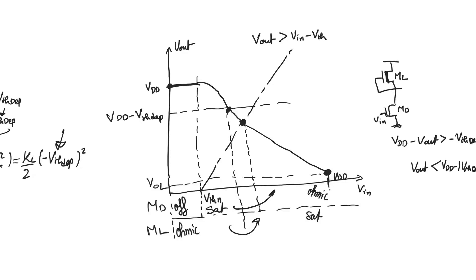The resulting VTC is still somewhat wasteful and not near the ideal VTC — it doesn't give the best possible noise margins. But unlike the enhancement load VTC, which had two straight-line sections intersecting near V_threshold and forced V_input_low to equal V_threshold, the depletion mode inverter has a V_input_low that is higher than V_threshold. The noise margins are therefore somewhat improved over the enhancement load inverter.